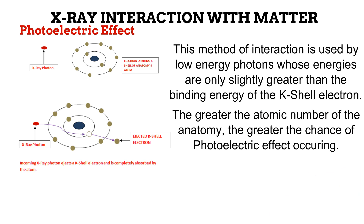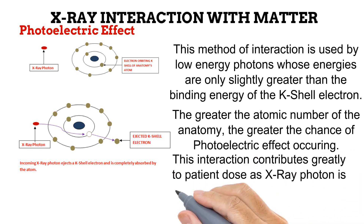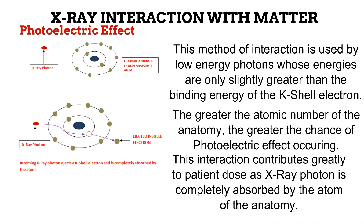The greater the atomic number of the anatomy, the greater the chance of photoelectric effect occurring. This is because atoms with high atomic number have more electrons, giving the photon a higher chance of running into and interacting with an electron. A good example is bones, which are made of calcium — an element with a high atomic number. X-rays are greatly absorbed by bones; this is photoelectric absorption occurring. Because the photon does not leave the patient's anatomy, photoelectric effect is the interaction responsible for the radiation dose received by the patient.